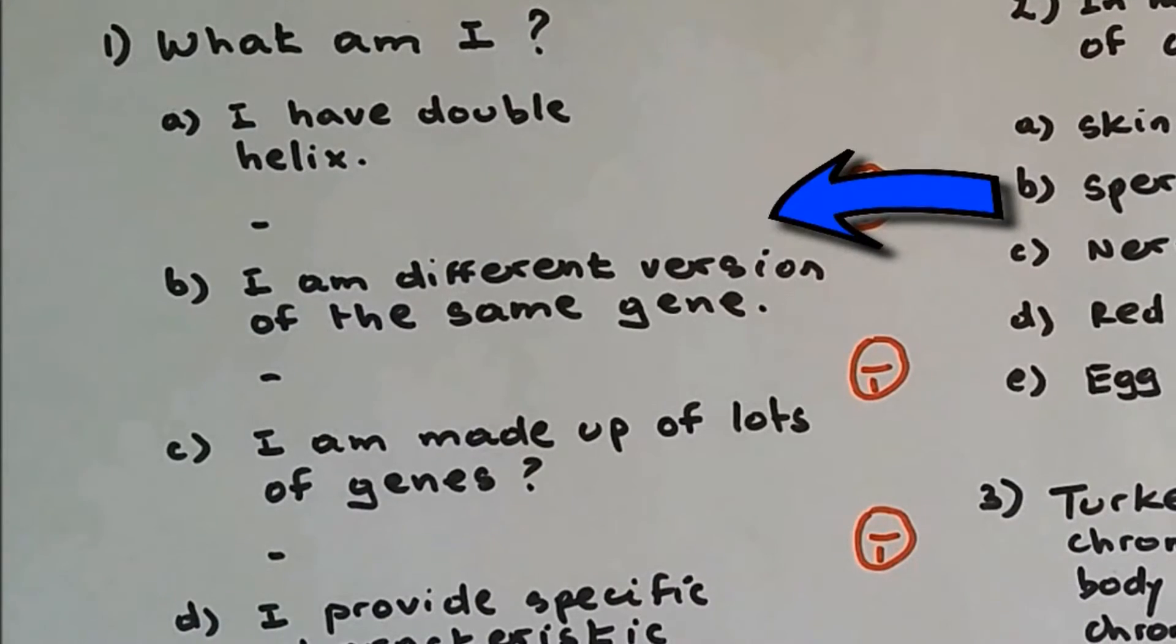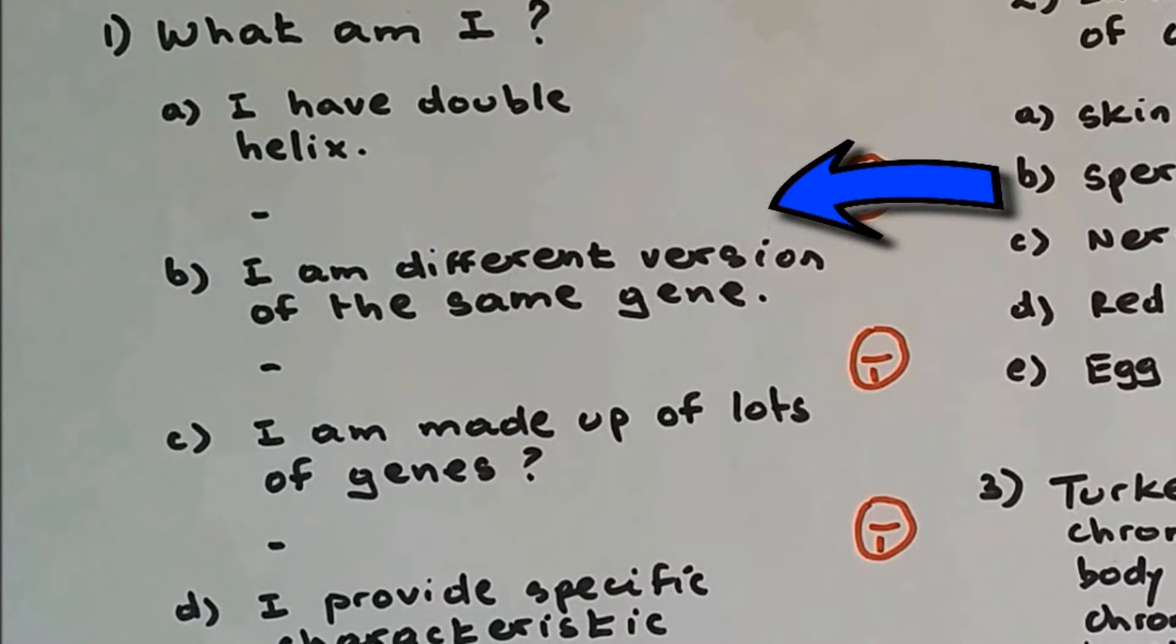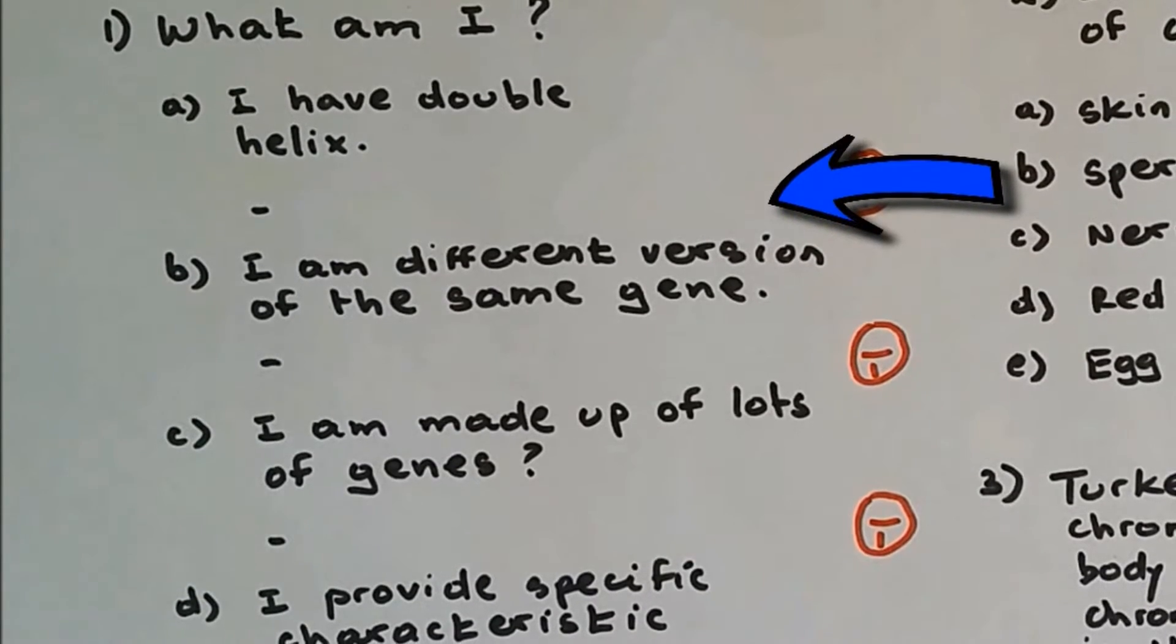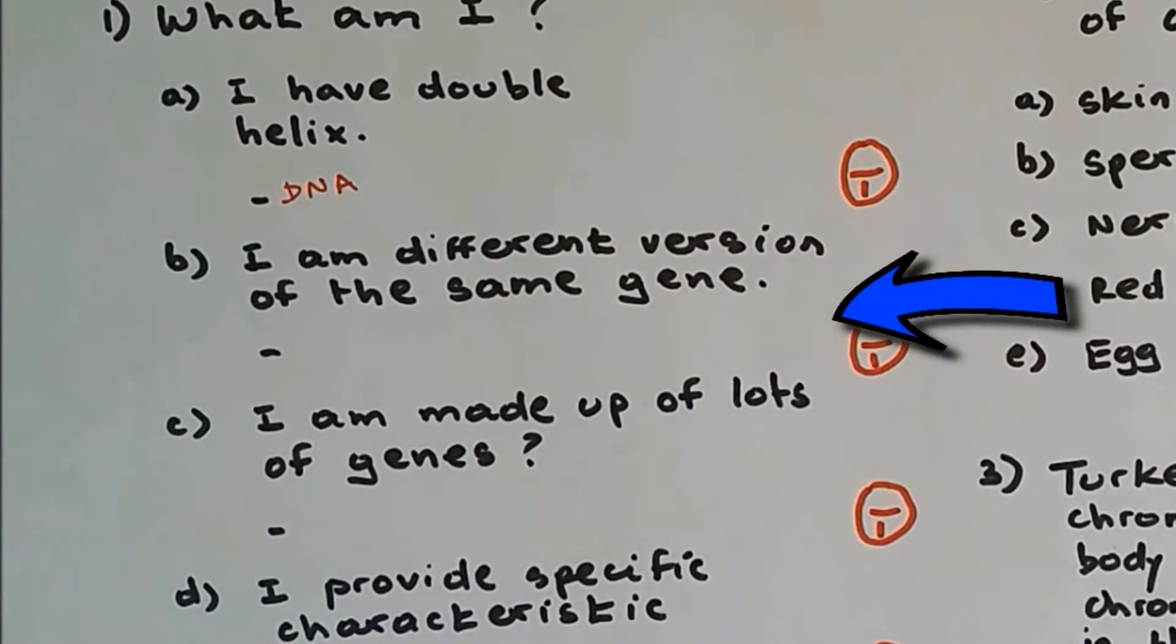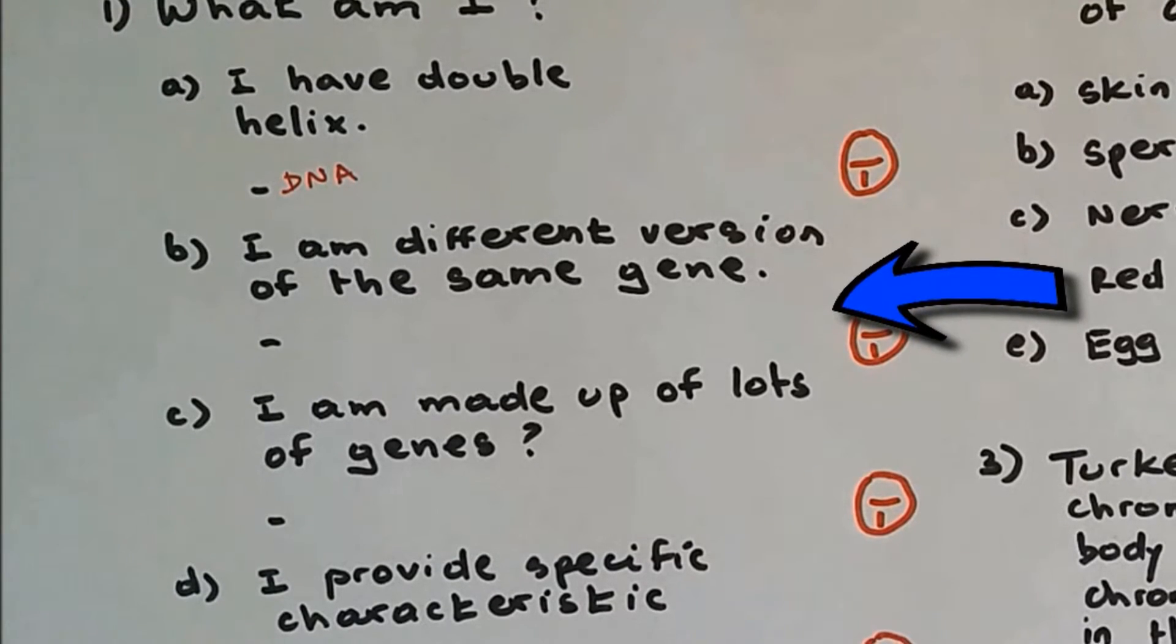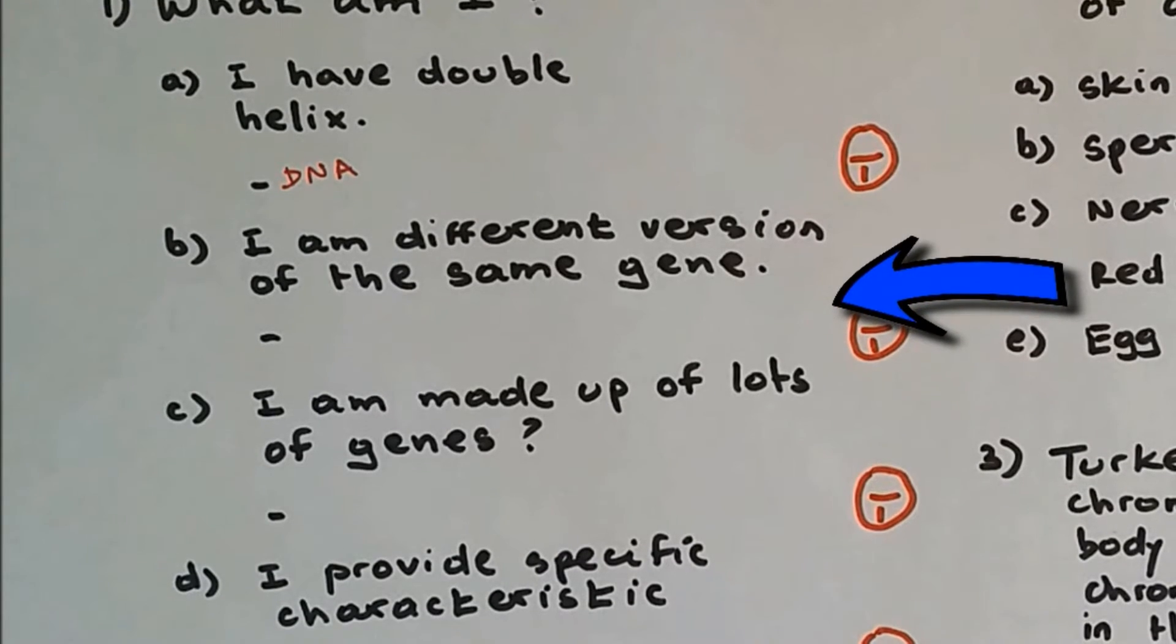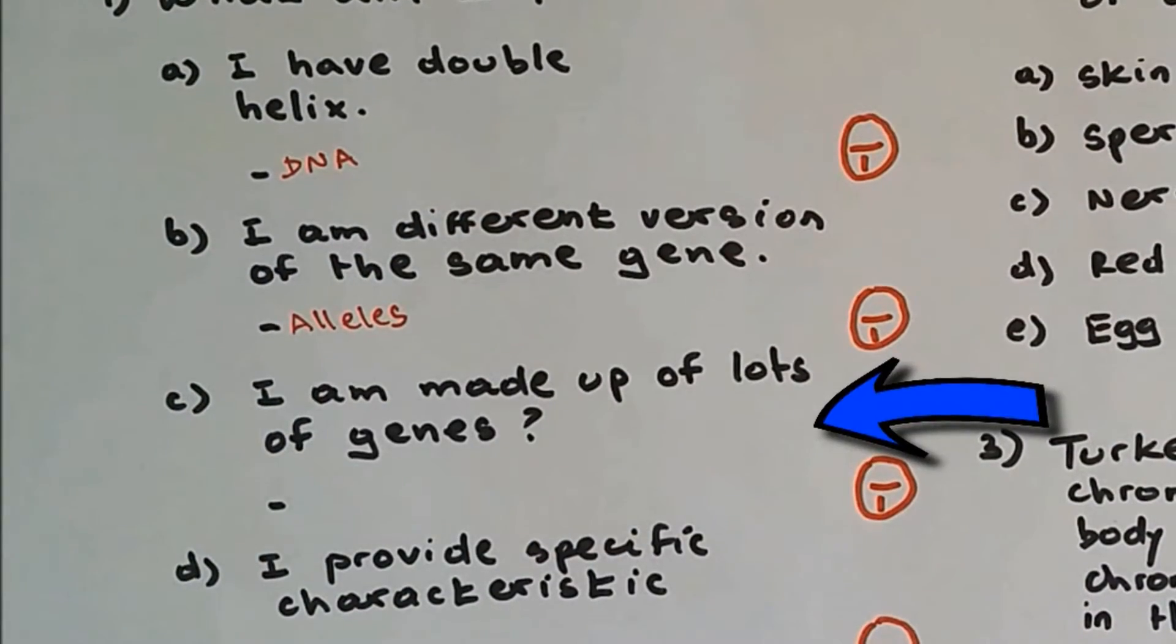Question number one: What am I? Part A: I have double helix. What contains double helix is DNA. Part B: I am a different version of the same gene. What contains different versions of the same genes are alleles.